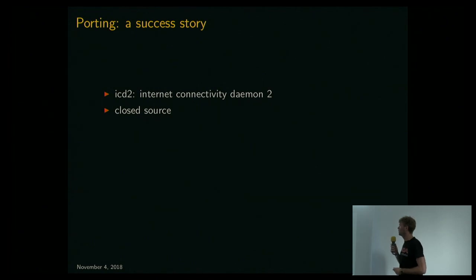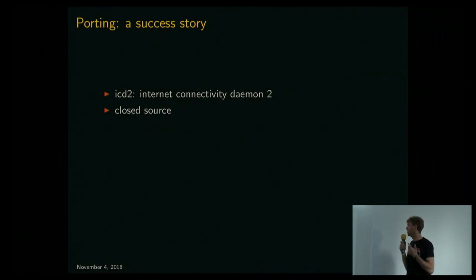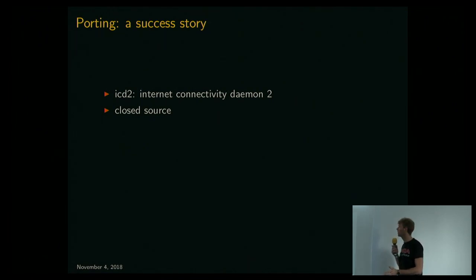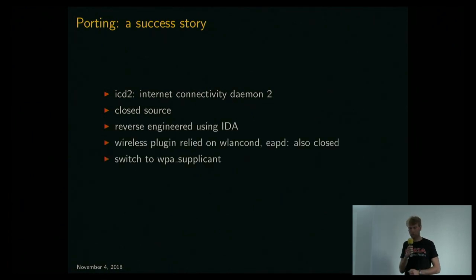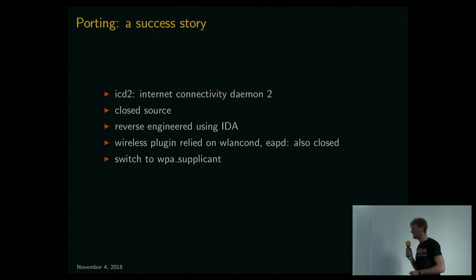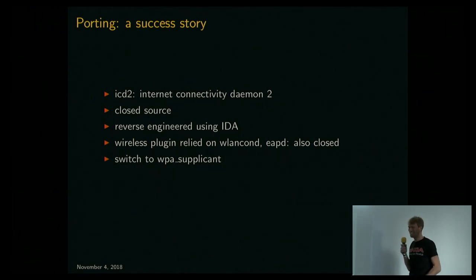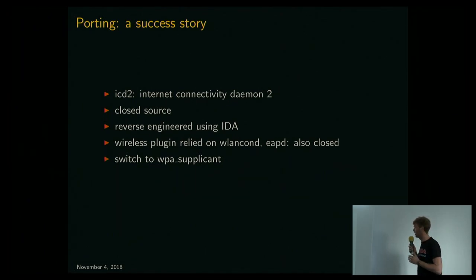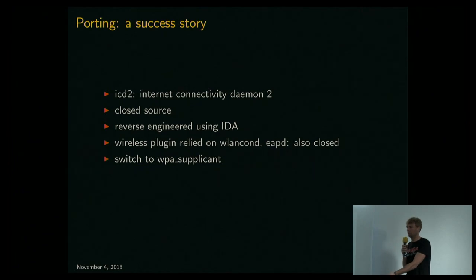One of the closed source components was the internet connectivity daemon, ICD2. It arranges wireless, 3G data, and USB networking — it's partly a daemon and partly some UI components. Someone from the community reverse-engineered it entirely using IDA, and I think it took about half a year — just the binary, no debug symbols. At some point it started working, and the UI looked exactly the same as on the old OS. The nice thing is you can take the reverse-engineered code, run it on the old Fremantle OS, see if it works right, and then you know you did the right thing.